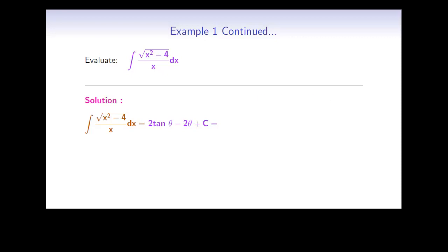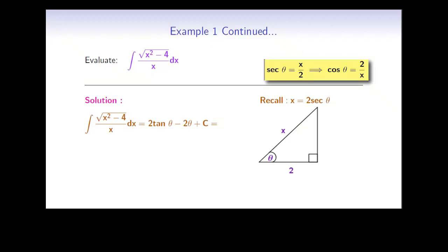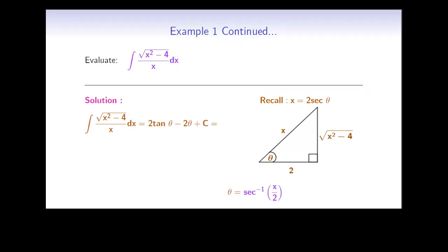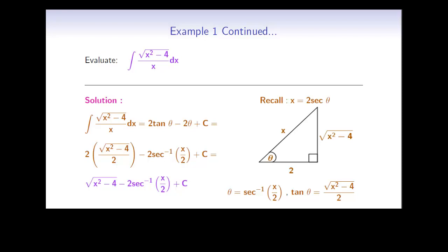Now we change back to x. The substitution was x equals 2 secant theta, so secant theta equals x over 2, or cosine theta equals 2 over x. Using the Pythagorean theorem, the third side is the square root of x² minus 4. From the triangle, theta equals secant⁻¹(x/2) and tan theta equals the square root of x² minus 4 divided by 2. Substituting back, the final answer is the square root of x² minus 4 minus 2 secant⁻¹(x/2) plus C.